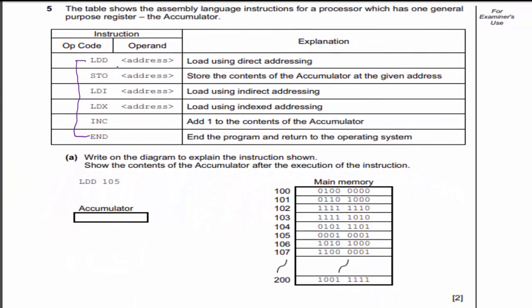On the exam over the past few years, they've been pretty generous giving you descriptions for all of them. Rather than just say load using direct addressing, they actually give an example of what that means. We'll take a look at some questions like that later, but let's dive into this one. The question asks us to explain the instruction shown and show the contents of the accumulator after the execution of the instruction. So we're looking for LDD 105.